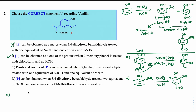Option C: A position isomer of vanillin can be obtained when 3,4-dihydroxybenzaldehyde is treated with one equivalent NaOH and one equivalent MeBr. This is the same scenario as Option A — the more acidic OH gives an O-minus that reacts via SN2 to give OMe at the para position. In vanillin the methoxy group is at the meta position, while this product has OMe at para — so they are position isomers. Option C is correct.